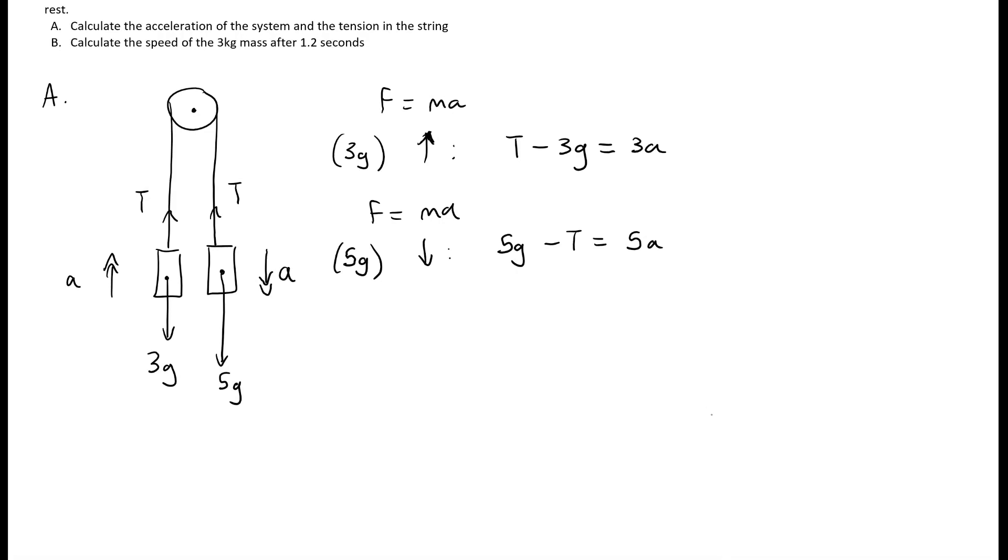Then let's look specifically at question A: calculate the acceleration of the system and the tension in the string. So that's essentially we're just being asked to solve these two equations simultaneously. The easiest way to do this is by elimination - just adding the two equations together - and we'll end up with 2g is equal to 8a, which means that g over 4 is equal to a. Therefore a must be 2.45 metres per second squared.